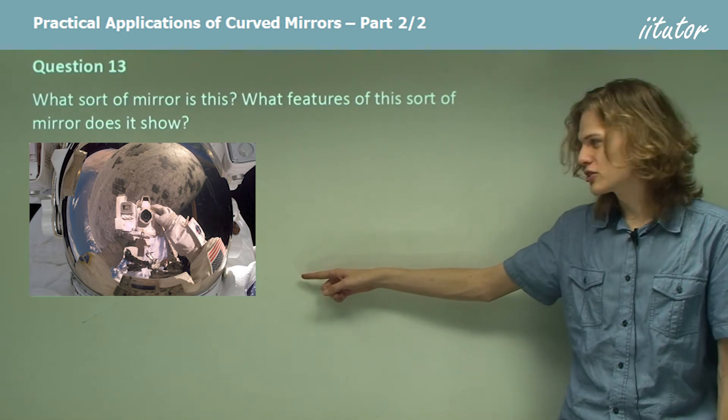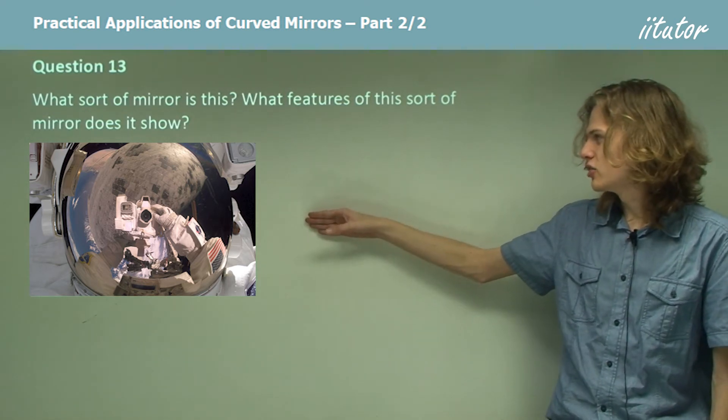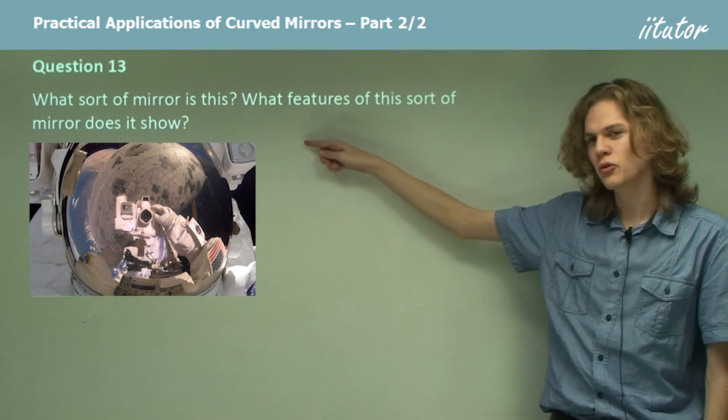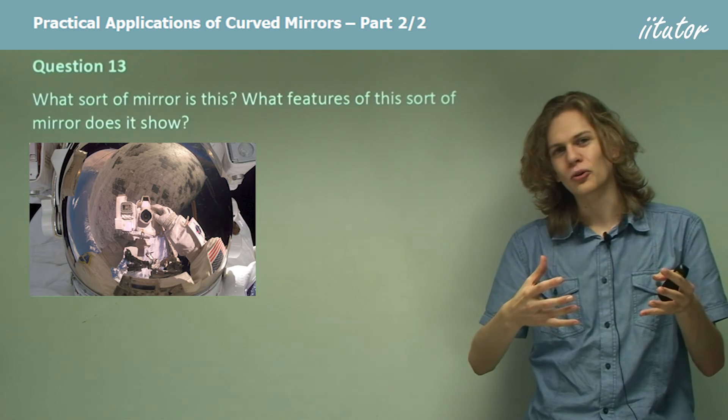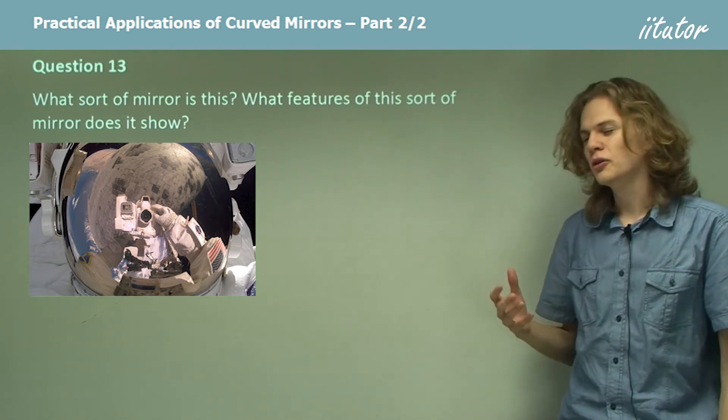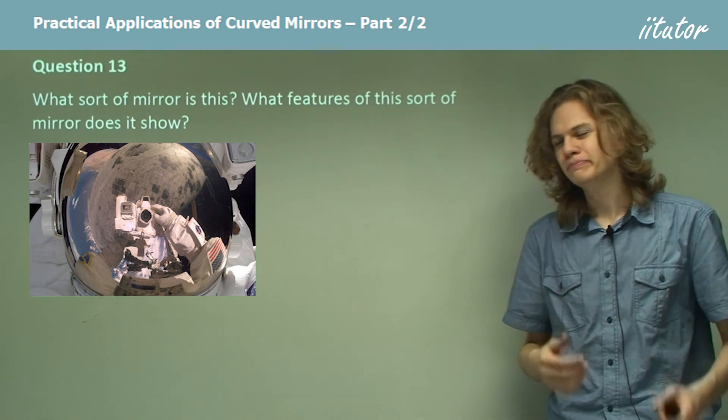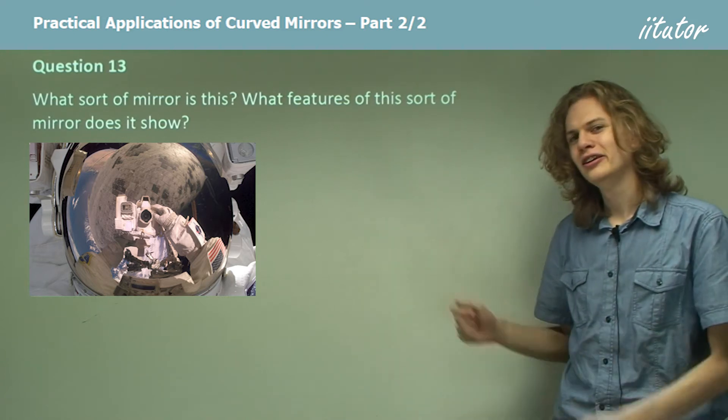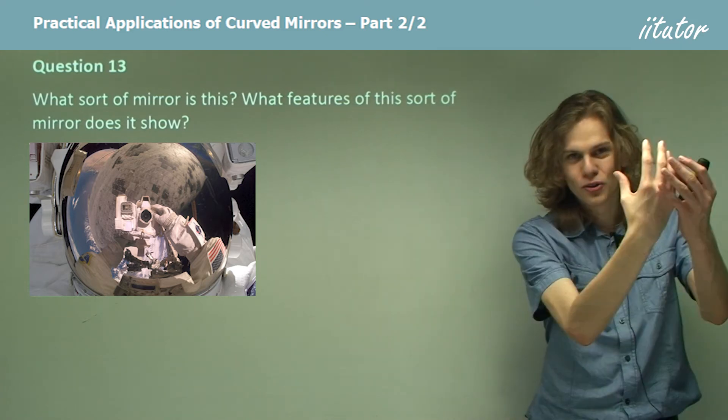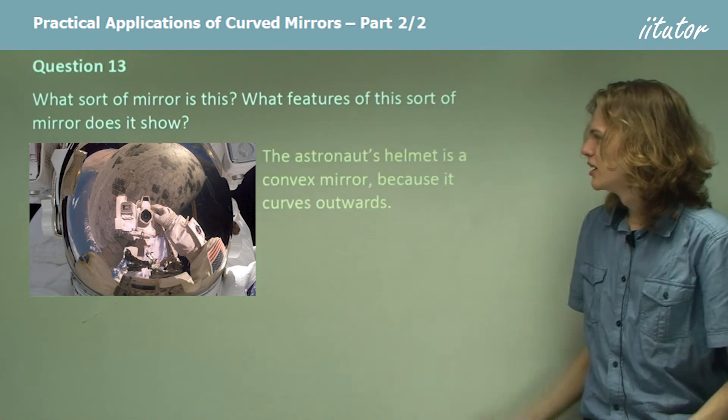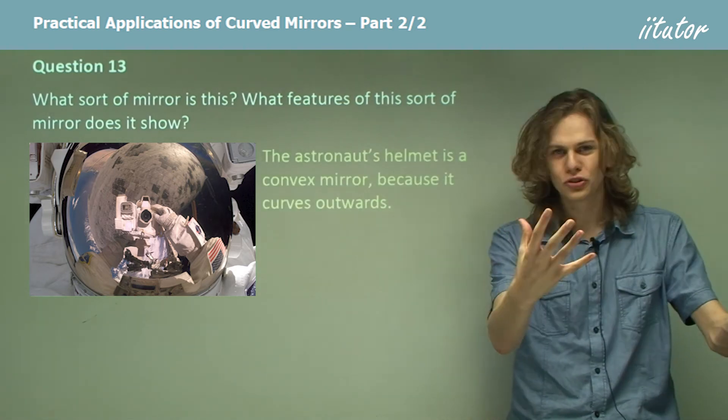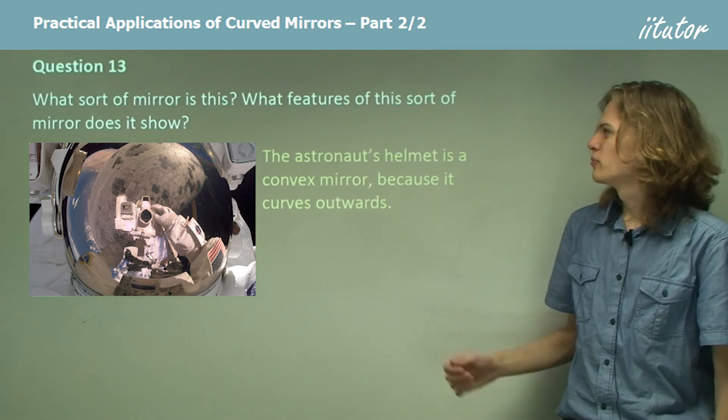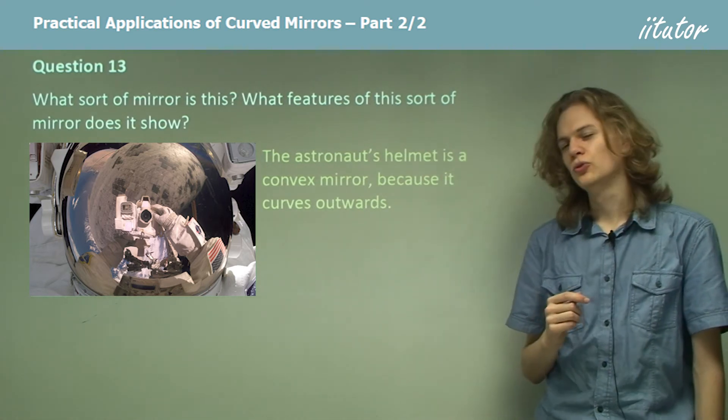Ignore the reflection in the middle of the picture for a moment, and concentrate just on the edges. This is the shoulder of the astronaut, and the side of his head is up here, the top of it being at the top of the picture. The big reflective thing in the middle is the helmet of the astronaut. It's got its sun visor up so that it reflects all the sunshine, as well as the mirror with which he's taking a photo of himself. The astronaut's helmet is in fact a convex mirror because it bulges outward. So the second part of the question asks, what features of this sort of mirror does it show?